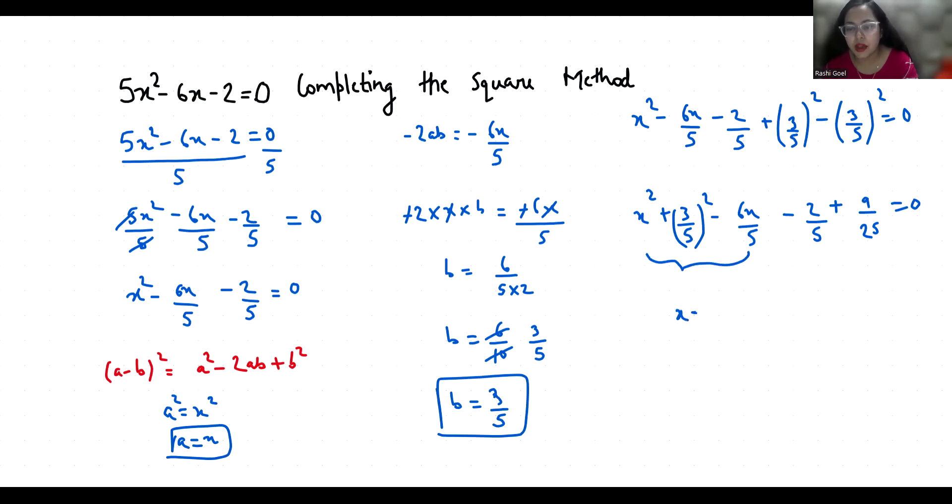So (x - 3/5)² = 2/5 - 9/25. So x - 3/5 equals, sorry here is negative. So (x - 3/5)² equals, 9/25 goes to other side, 9/25 + 2/5. Then we take LCM, it's 25. In table of 5, 25 comes at 5 place. So 2 times 5 is 10.